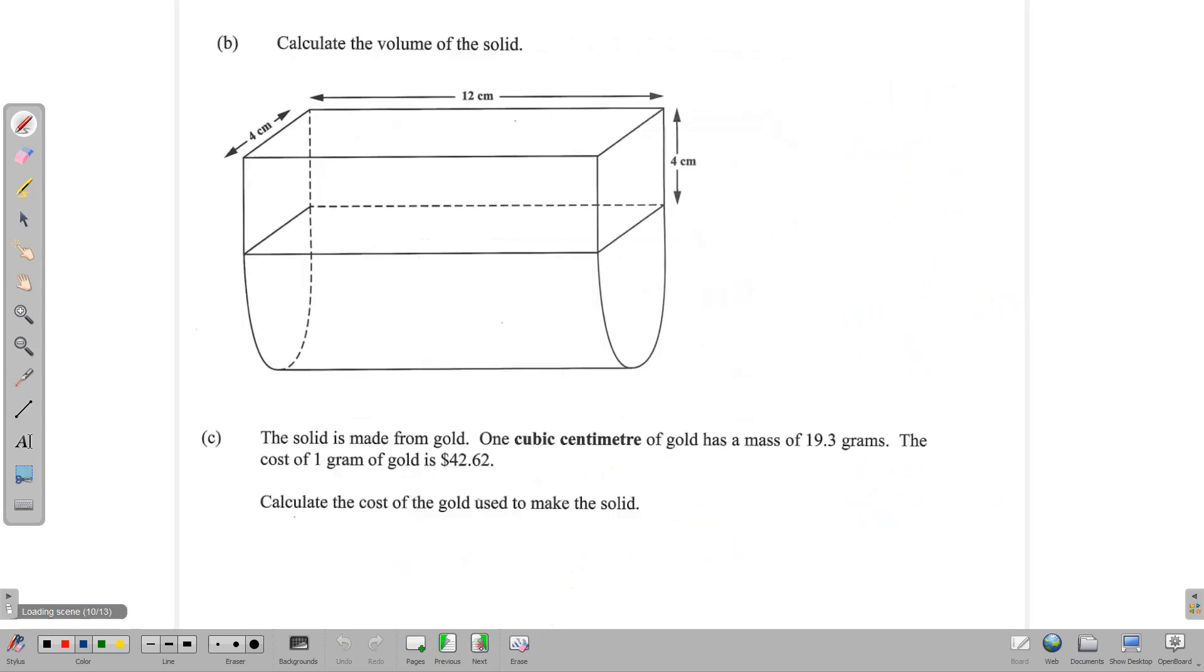Moving on to the next part, we are asked to calculate the volume of the solid. And the volume is given as the area of the cross-section times the height or the length, as the case may be. Now the cross-section is this side right here. All of this is the cross-section. And so we need to find the area of this and then multiply it by 12, and we will get the volume of our solid.